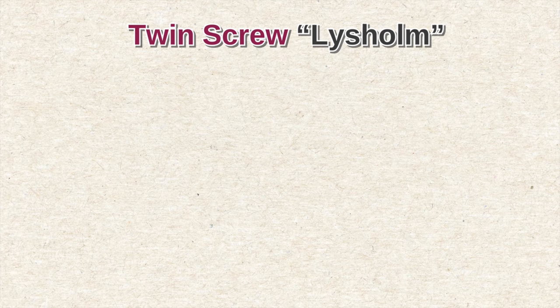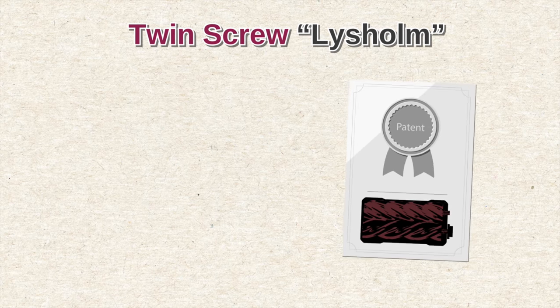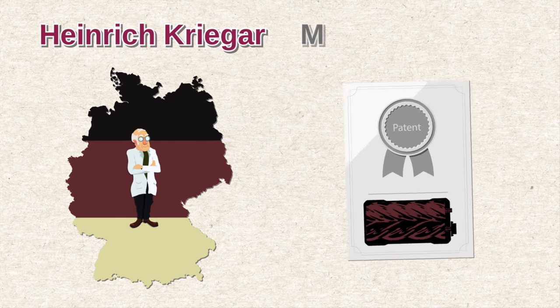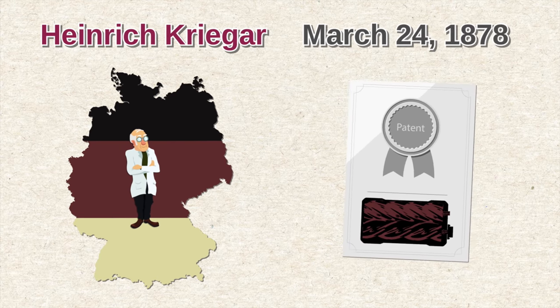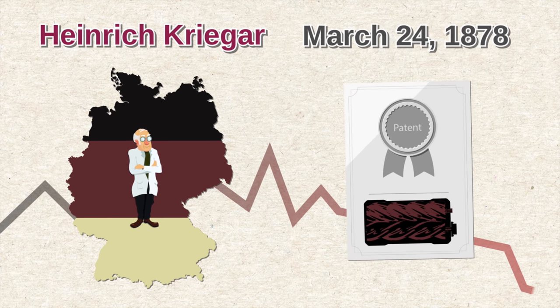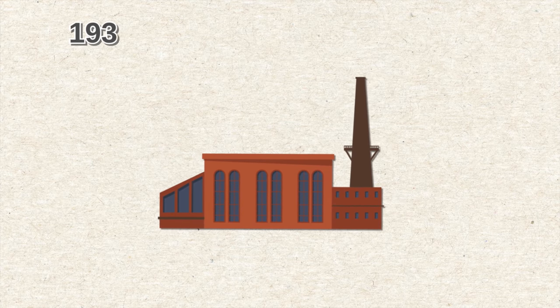The twin screw supercharger, like Lysholm. For the first time a patent for a screw compressor was received by Henrik Rieger from Germany on March 24, 1878. Unfortunately, the lack of technology at that time did not allow Heinrich to achieve mass production of the screw compressor.